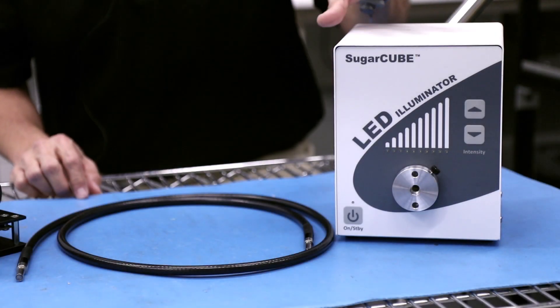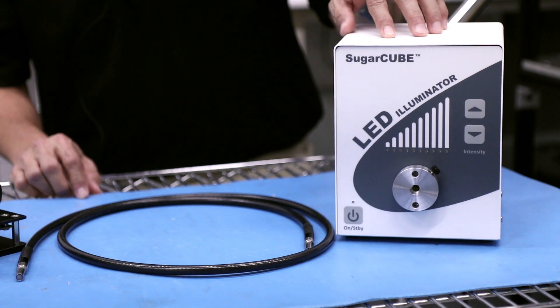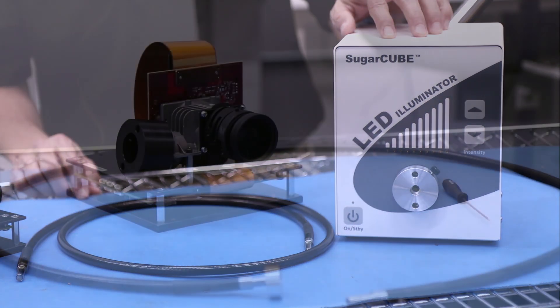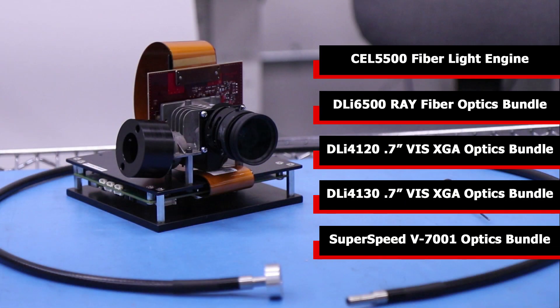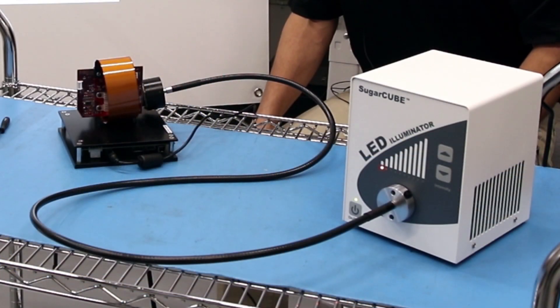Digital Light Innovations is proud to offer Sugarcube LED light sources to our DLP customers. The Sugarcube light sources complement DLI's line of DLP fiber light engines and optics bundles. In this video we'll demonstrate how to couple the Sugarcube light source to our DLI 6500 ray fiber optics bundle.